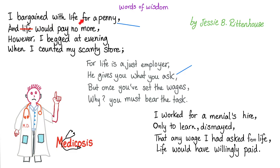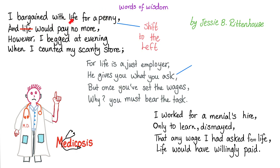Pause and review. 'I bargained with life for a penny, and life would pay no more. However, I begged at evening when I counted my scanty store. For life is a just employer — he gives you what you ask. But once you have set the wages, why, you must bear the task. I worked for a menial's hire, only to learn, dismayed, that any wage I had asked of life, life would have willingly paid.' This is the left shift — life is not giving the tissue any oxygen. But life is a just employer: if you need oxygen because you're exercising, it shifts right and gives you more.